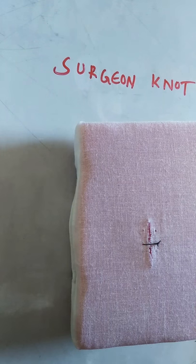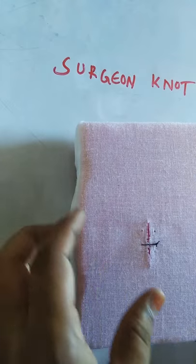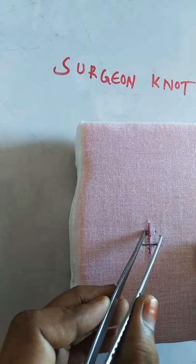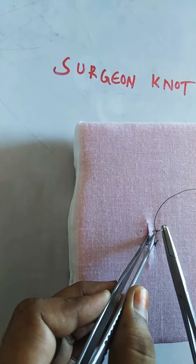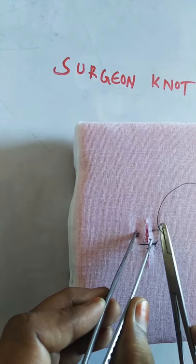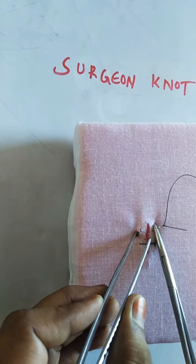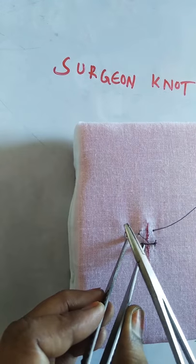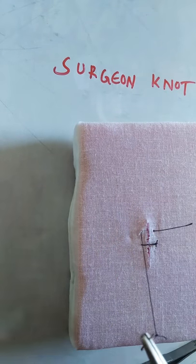Now we will see about the surgeon's knot. There is an incision site with two edges. I will hold one edge with the Adson tissue holding forceps, pass the needle perpendicular to the tissues, and pass through both edges at once. Then you have to pull the suture through the tissues.